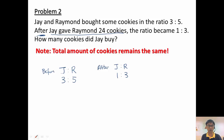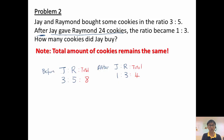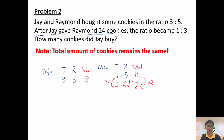So I find the total number of units both have. Before: 3 plus 5 equals 8 units total. After: 1 plus 3 equals 4 units total. But the total remains the same, so I make them equal by multiplying the after ratio by 2 to get 8. So after becomes 2 to 6 with a total of 8. Now comparing: Jay initially had 3 units, after he had 2 units — he lost 1 unit, which makes sense since Jay gave Raymond 24 cookies. Raymond went from 5 units to 6 units — he gained 1 unit. So 1 unit equals 24 cookies.